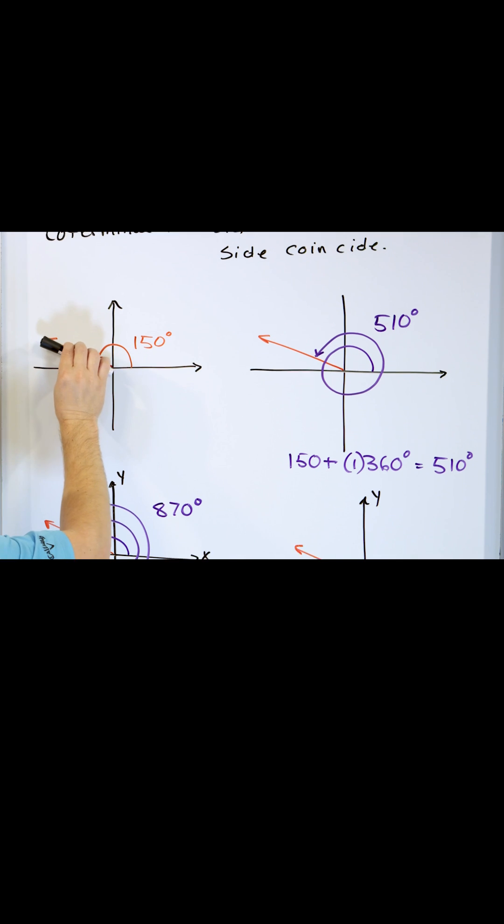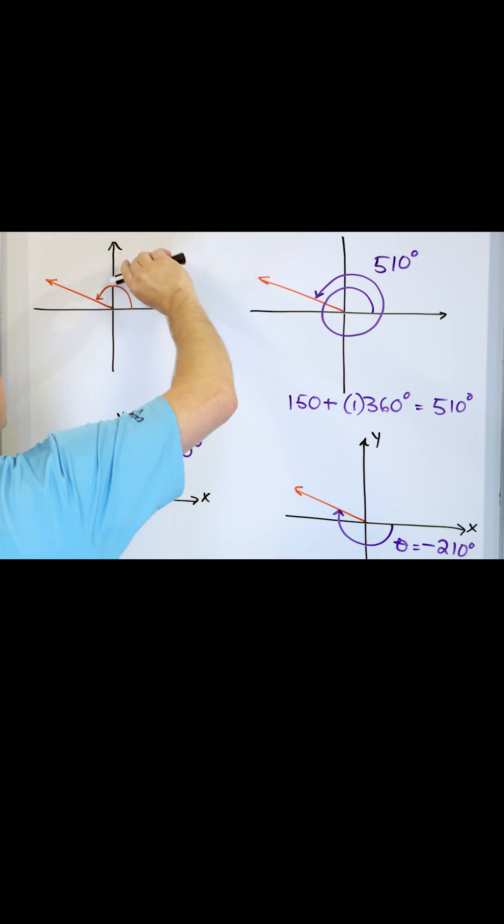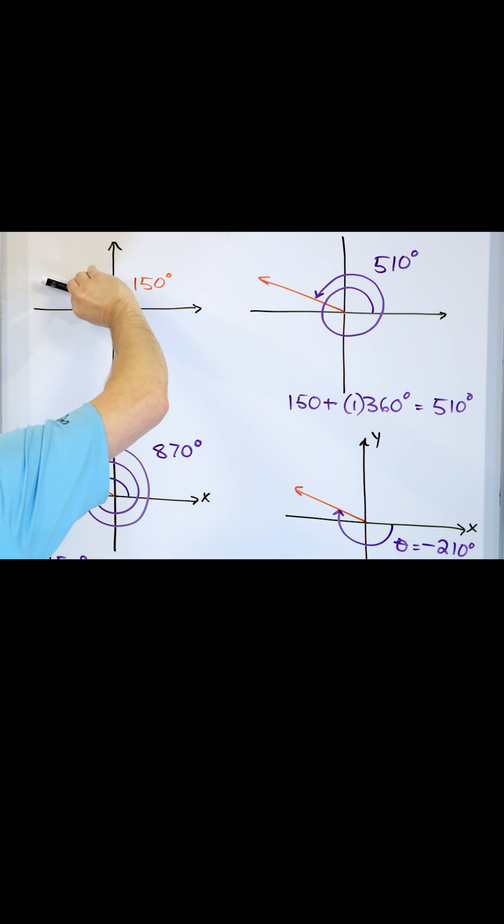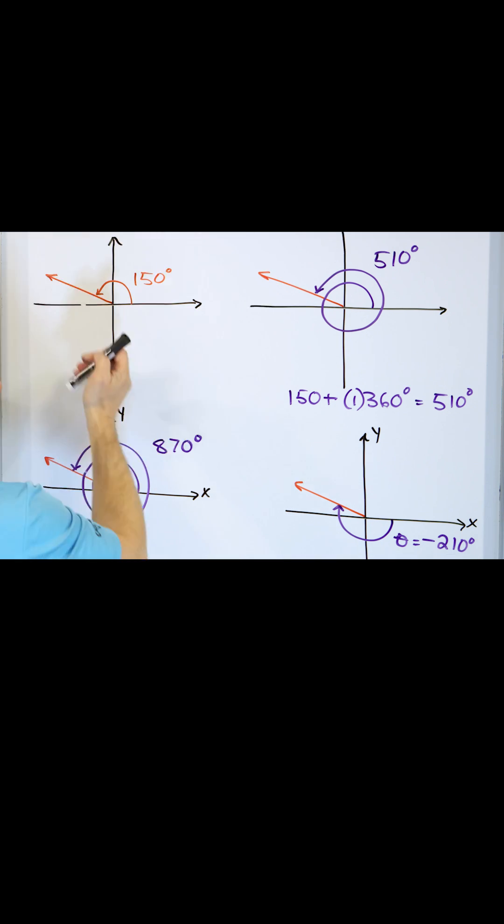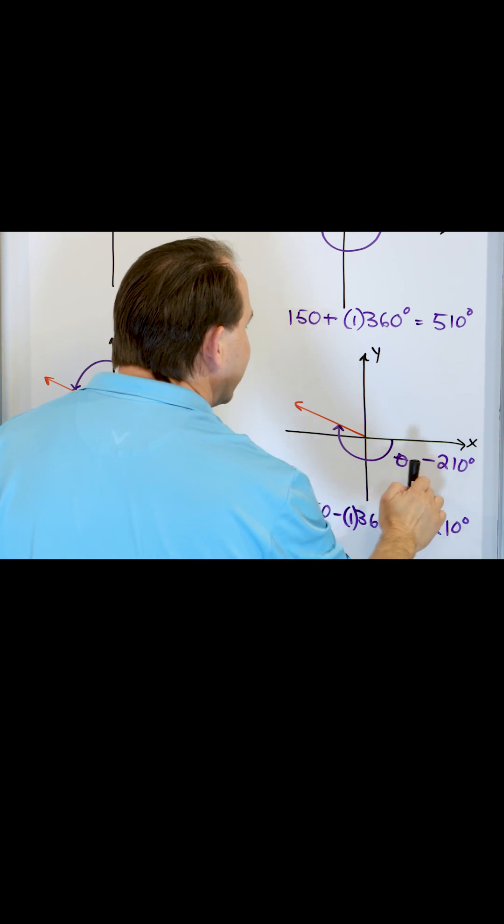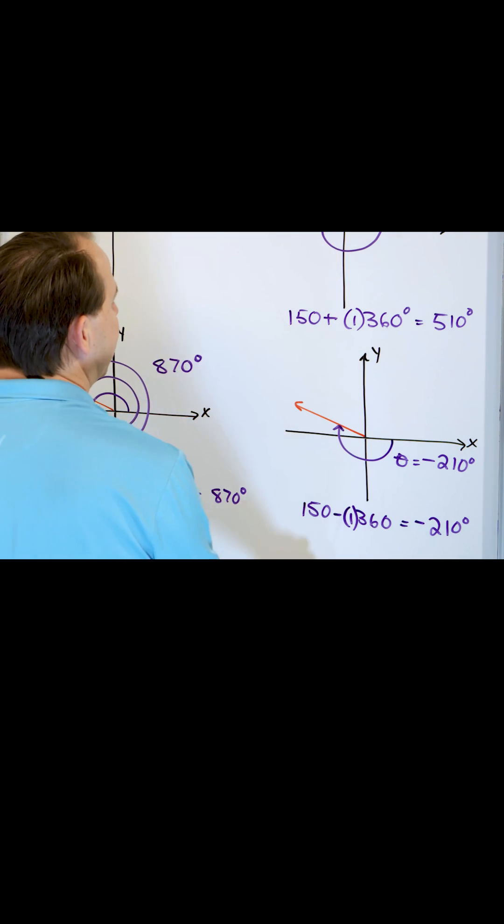Likewise, I can start at the same location. Instead of adding 360 going this way, I can start at this location and subtract, which means I go the other way, subtract 360 going here. When I do that subtraction, I get a negative angle, which also represents the same physical thing.